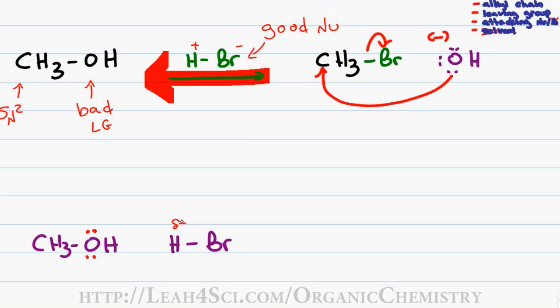Applying the shortcut here we have a partially positive hydrogen on a partially negative bromine. We also have a partially negative oxygen on our methanol molecule. True to our principle of nucleophile attacks electrophile, the oxygen will grab the hydrogen that's attached to bromine breaking the bond between hydrogen and bromine.